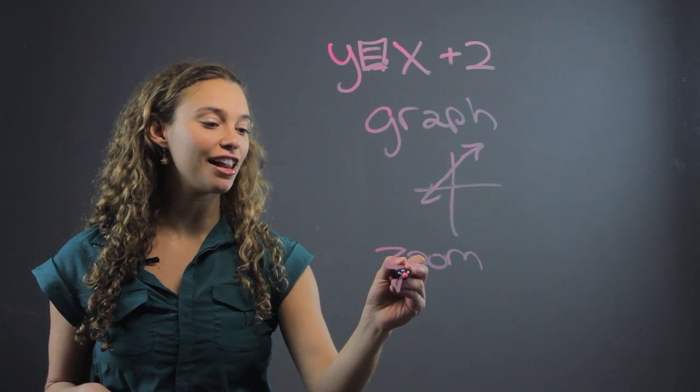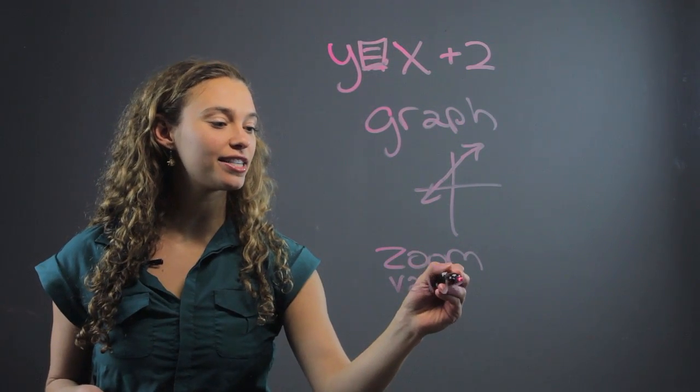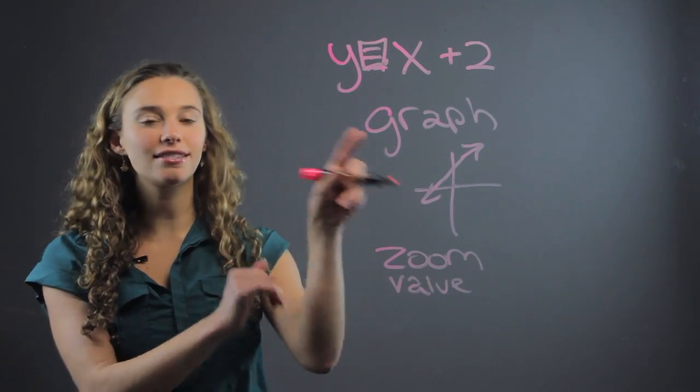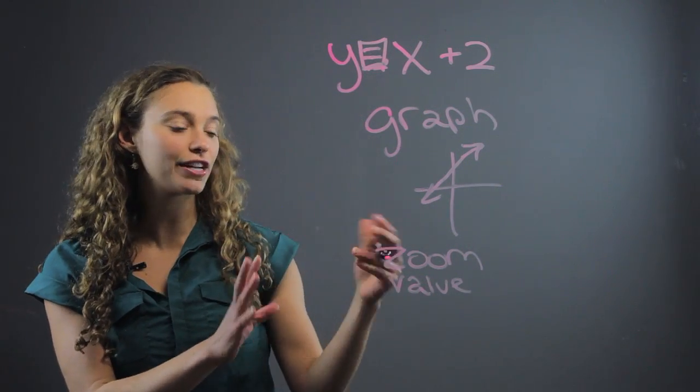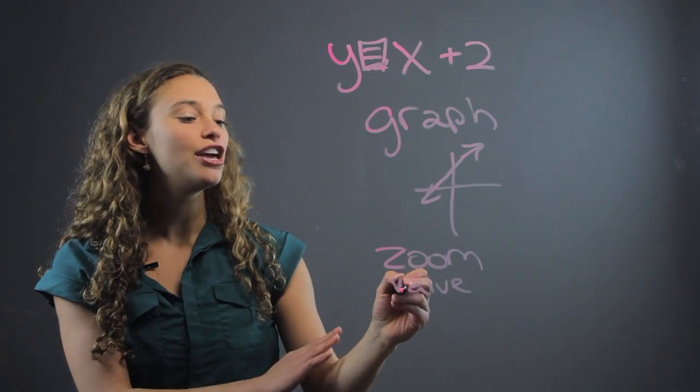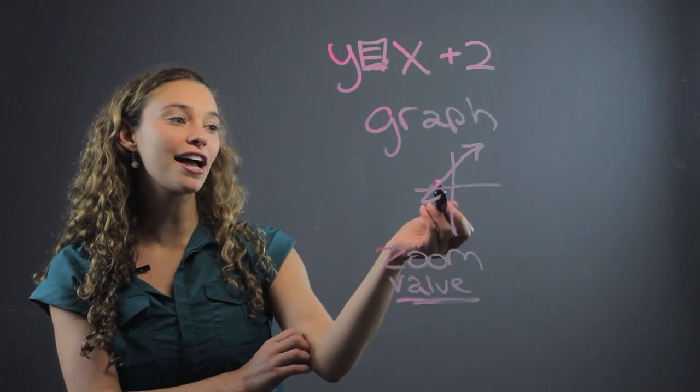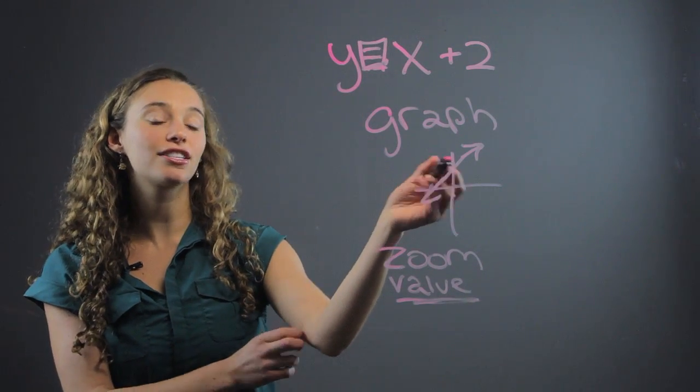You can go to values with the trace key, which is like the second calculator. I think it's different for each graph. But if you go to that part, you can search for different values of x, where x is a certain number.